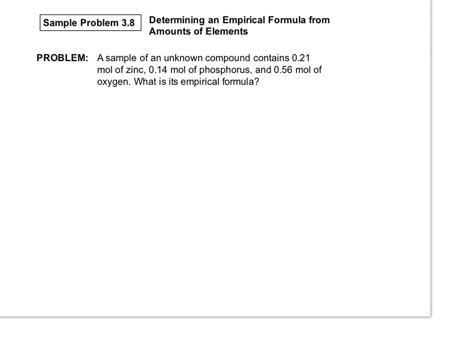Remember, the empirical formula is simply the smallest whole number ratio of atoms in a molecular formula. For example, if we have the molecular formula for hydrogen peroxide H2O2, its empirical formula would be HO. 2 divided by 2 equals 1, so it's the simplest form.